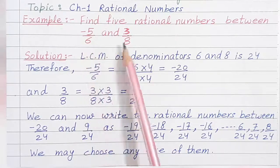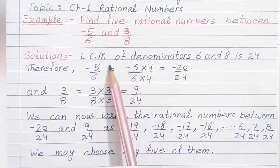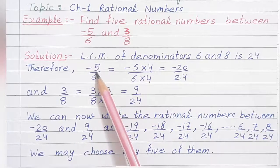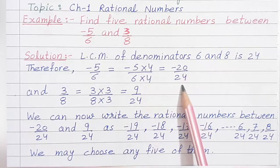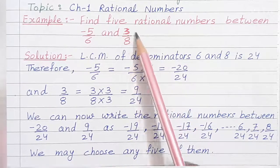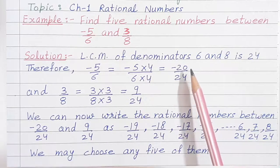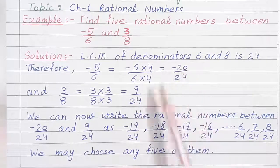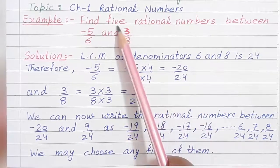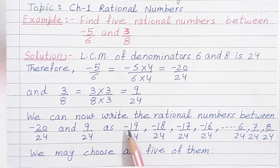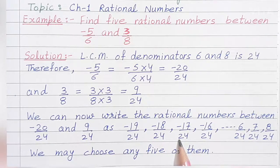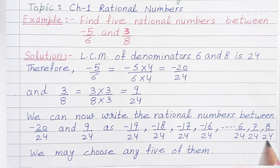The example is: find 5 rational numbers between minus 5 upon 6 and 3 upon 8. We can see the denominators are different, so we take the LCM, which is 24. Minus 5 upon 6 becomes minus 20 upon 24, and 3 upon 8 becomes 9 upon 24. The numbers lying between minus 20 and 9 are many, but we have to choose any 5. The numbers can be minus 19 upon 24, minus 18 upon 24, minus 17 upon 24, and so on — and in the positive direction, 6 upon 24, 7 upon 24 and 8 upon 24. We can choose any 5 of them.